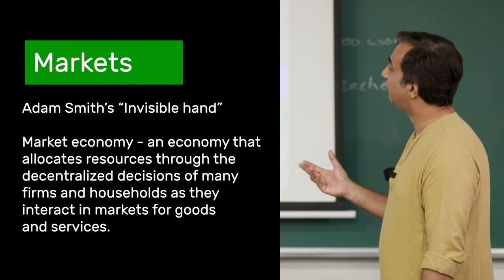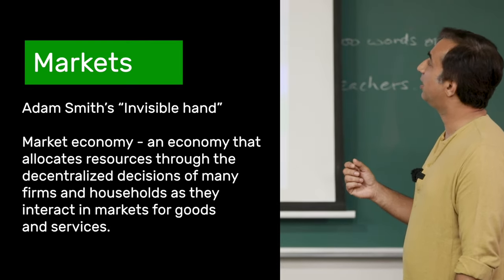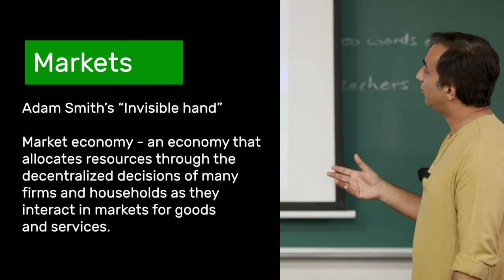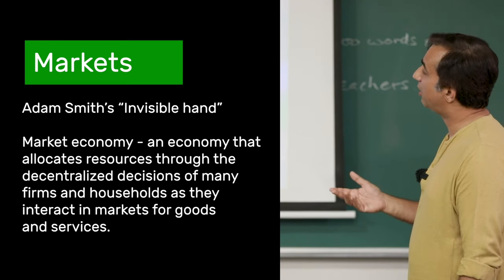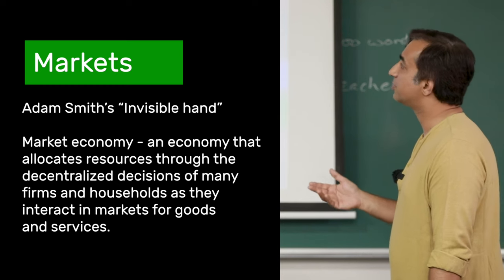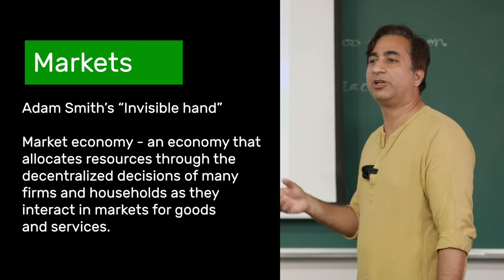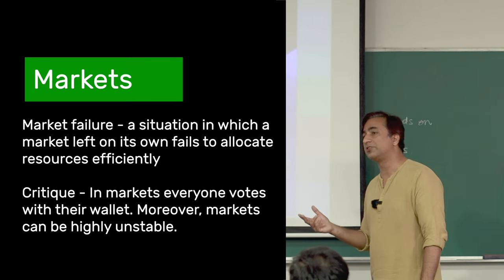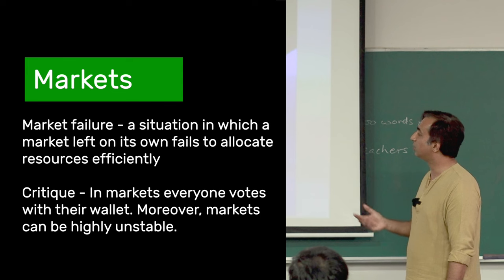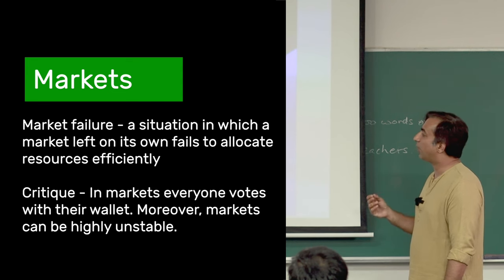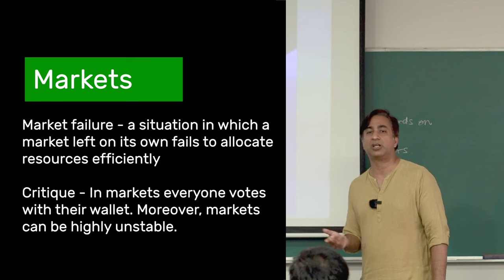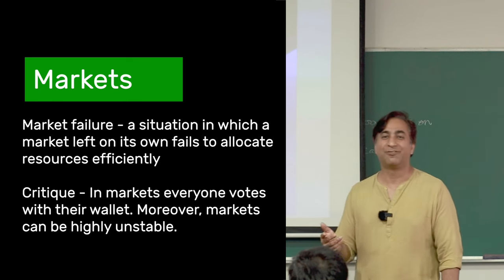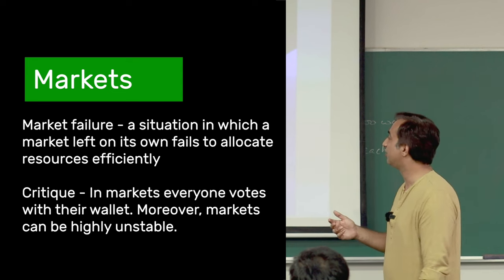Markets are central to our understanding. Adam Smith's invisible hand: a market economy allocates resources through decentralized decisions of many firms and households as they interact in markets for goods and services. All economists accept that market failures occur - a situation where a market left on its own fails to allocate resources efficiently. From the social point of view, this will always be the case.